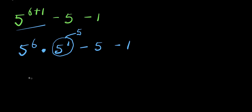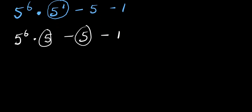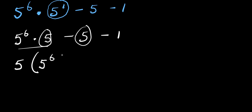There is a 5 here and a 5 here, so we can factor that out. I have my 5 outside, then I divide this term by 5 to get 5 to the power of 6. Then I bring the minus, divide 5 by 5 to get 1, and this is minus 1.